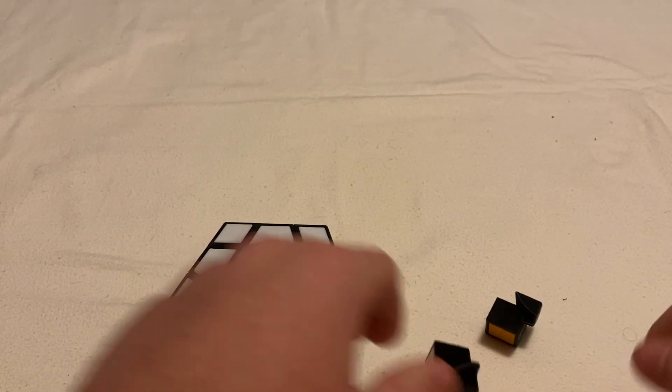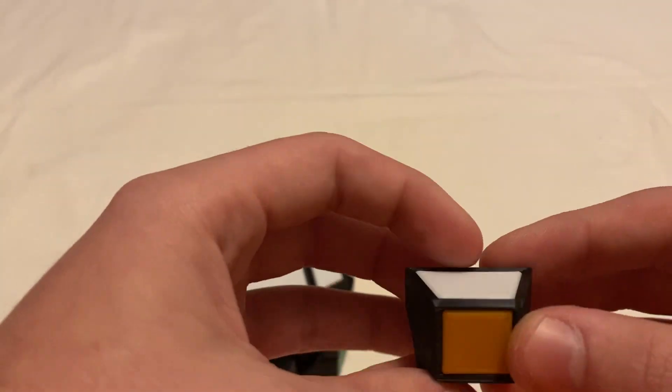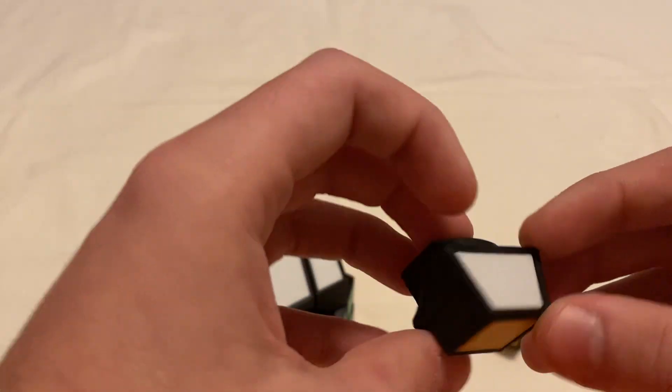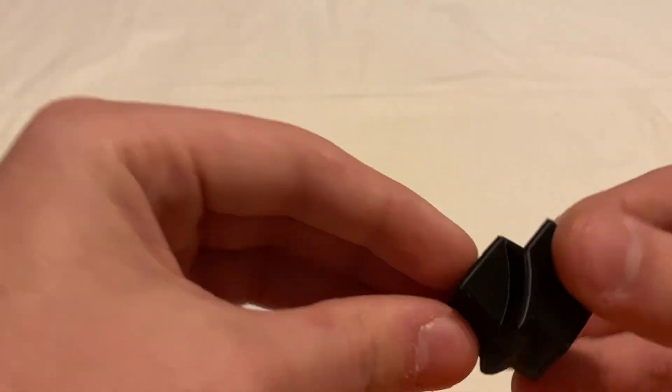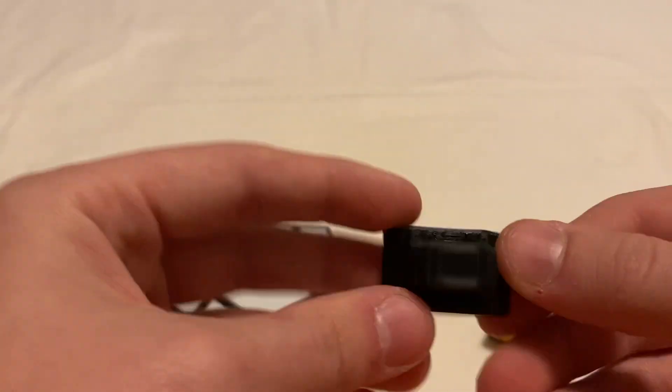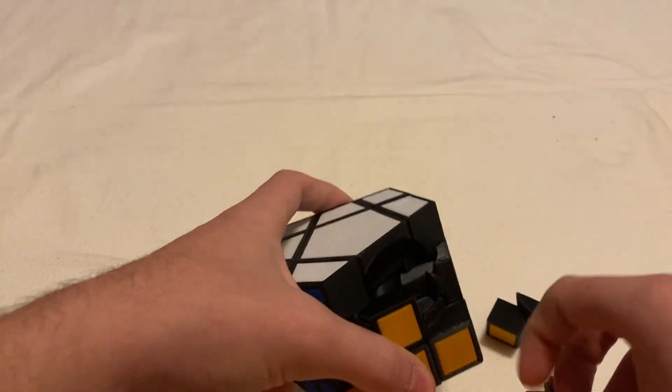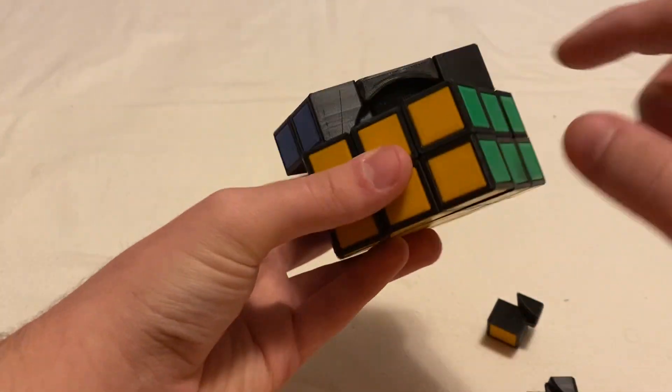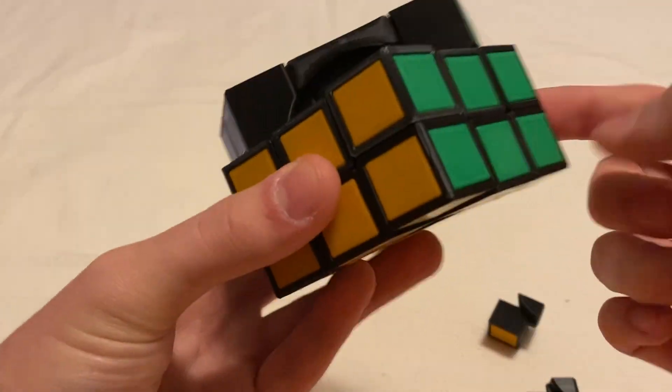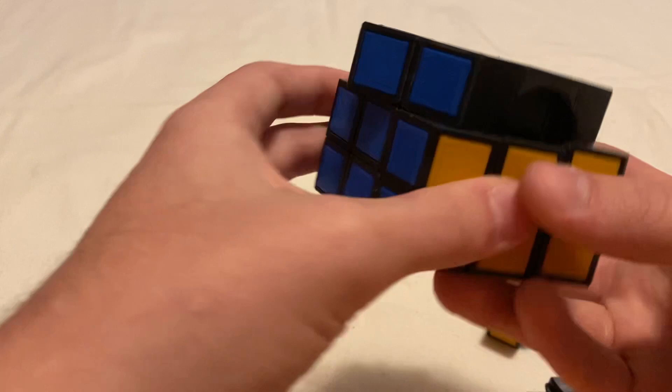And not only that, but it has two different types of edges. You got the square pentagon edges that look like this. So yeah, the square square edges, there are five of them, and they are around the equator layer.